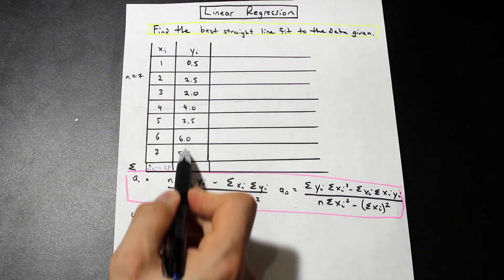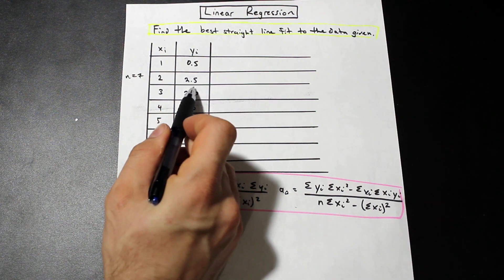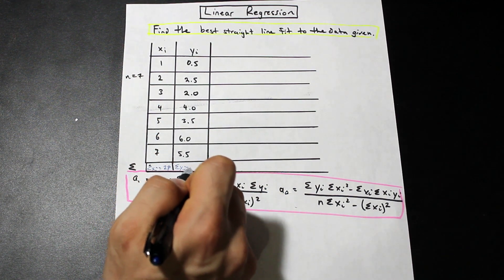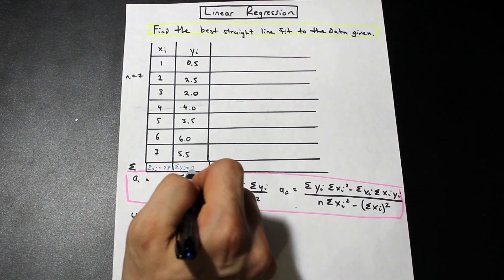We have the summation of yi here, so 0.5 plus 0.2, et cetera. Add these all up, put it down here. The summation of yi equals 24.